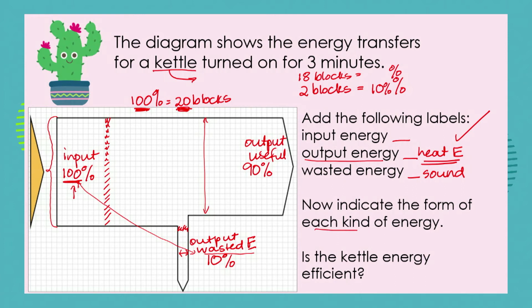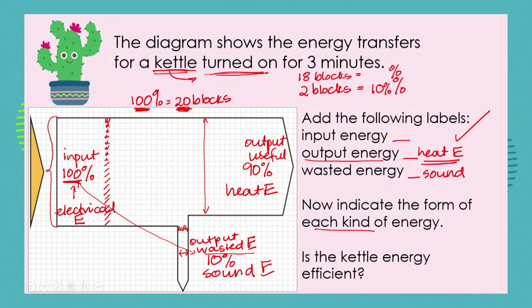We must now indicate each kind of energy. The kettle is turned on, so we're going to assume electrical energy as the input. Our useful output energy is heat energy, and our wasted output energy is sound energy. Now, is this kettle energy efficient? Out of 100% of energy we're putting in, 90% of it is useful. So yes, our kettle is pretty energy efficient.